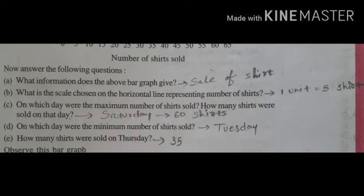Dear students, this is how we have to read the graph, and then we have to give the answers to the questions. First: what information does the above bar graph give? This bar graph gives us information about the sale of shirts from Monday to Saturday. Second: what is the scale chosen on the horizontal line representing number of shirts? Here one unit equals five shirts.